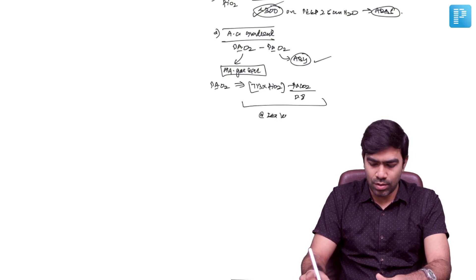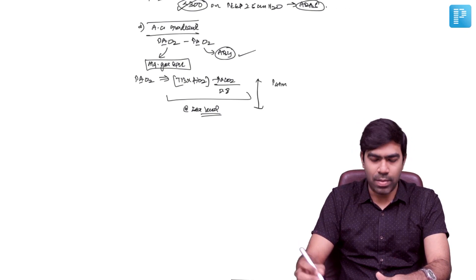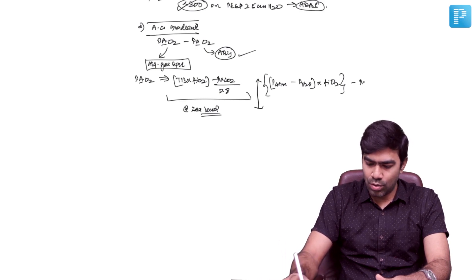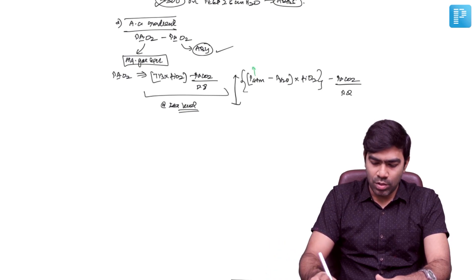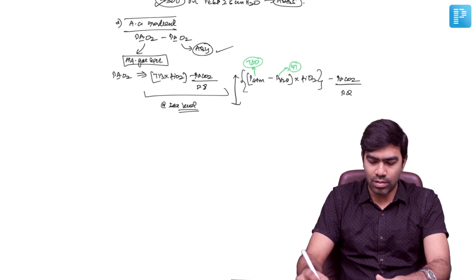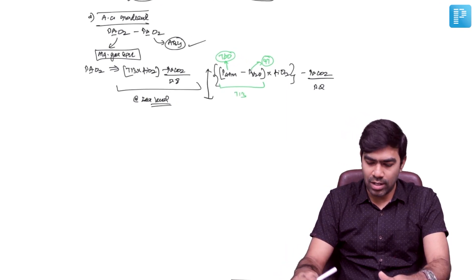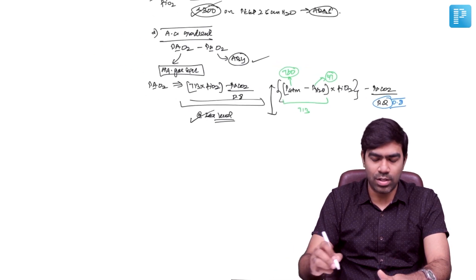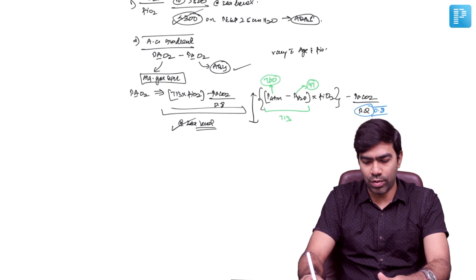The most accurate formula is: atmospheric pressure minus hydrostatic pressure of water, multiplied by FiO2, minus PaCO2 divided by the respiratory quotient. At sea level, atmospheric pressure is 760 mmHg and hydrostatic pressure is 47 mmHg, so that equates to 713. The respiratory quotient in a patient taking a mixed diet of carbohydrate and fat is 0.8. That's why the final formula at sea level gives that value. The normal AA gradient varies with age as well as FiO2 — both affect the normal AA gradient.